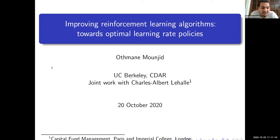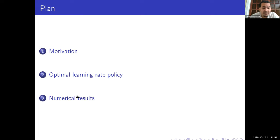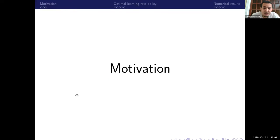Thank you for the invitation. In this presentation I'm going to introduce work done during my PhD thesis, where we try to find an optimal learning rate policy for some reinforcement learning algorithms. This is joint work with one of my PhD advisors. The outline is divided in three parts: motivation and insights, introducing our optimal learning rate policy, and presenting our adaptive method for the choice of the learning rate.